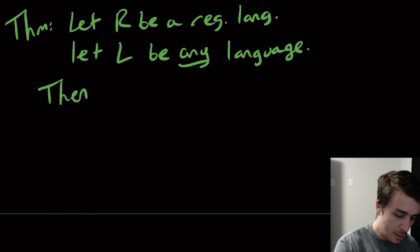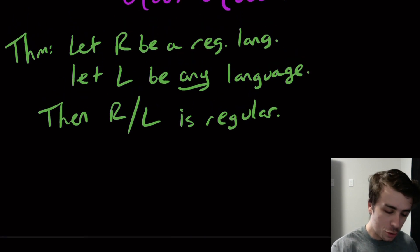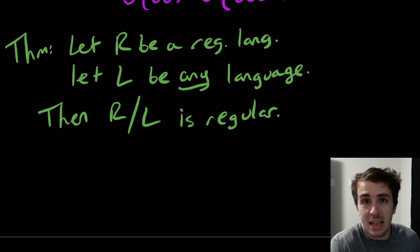Then R divided by L is regular. It's actually important that the first language here in the division is the regular language and the second one could theoretically be anything. If both of them are regular then obviously this is regular, because the first one's regular and the second one can be anything that you want, any language that you want. It could be an undecidable language if you wanted to.